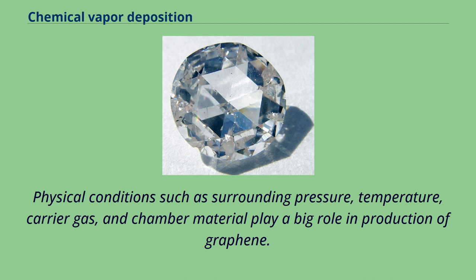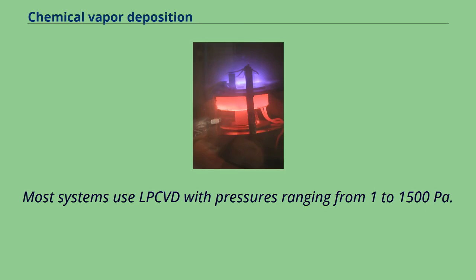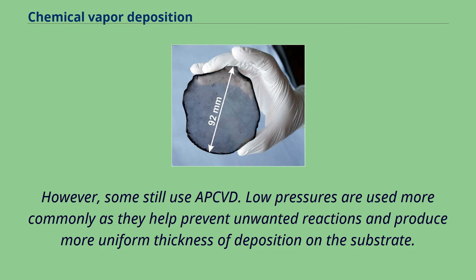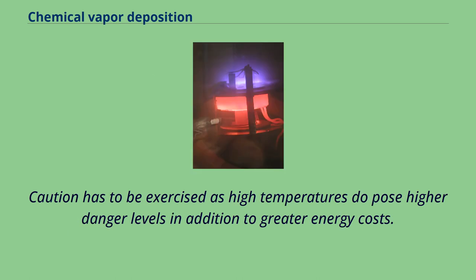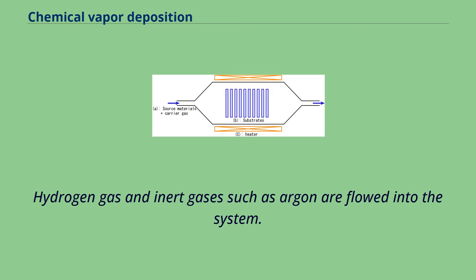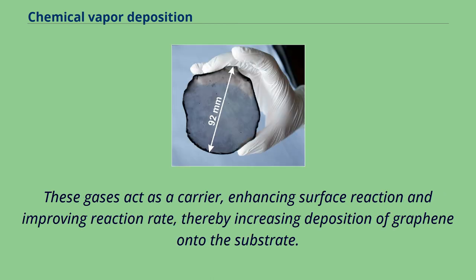Most systems use LPCVD with pressures ranging from 1 to 1500 Pa. However, some still use APCVD. Low pressures are used more commonly as they help prevent unwanted reactions and produce more uniform thickness of deposition on the substrate. On the other hand, temperatures used range from 800 to 1050 degrees Celsius. High temperatures translate to an increase of the rate of reaction, though caution must be exercised as high temperatures pose higher danger levels in addition to greater energy costs. Hydrogen gas and inert gases such as argon are flowed into the system, acting as a carrier, enhancing surface reaction and improving reaction rate, thereby increasing deposition of graphene onto the substrate.